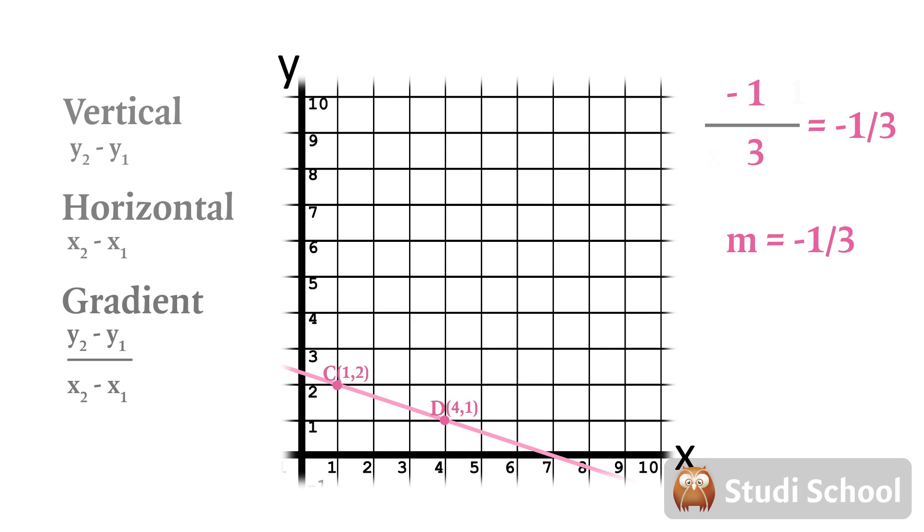That is no coincidence. For each step forward the line drops by one third of a step vertically. A negative gradient means a downward sloping line.